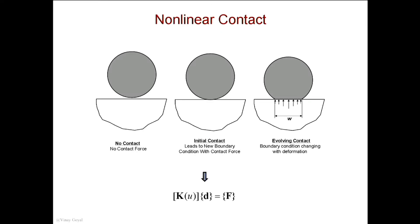A contact problem, for example: when I take this ball and apply a load against this rigid boundary, you expect this boundary to impart a contact pressure on the ball that flattens it. In this case, the amount of load imparted also changes the amount of pressure applied and the contact width, so your boundary condition is clearly changing. The stiffness matrix depends on the deflection, which is what you're trying to solve for — so it's a nonlinear problem.